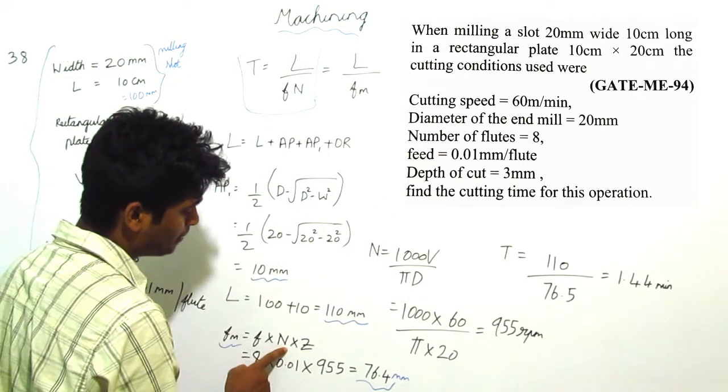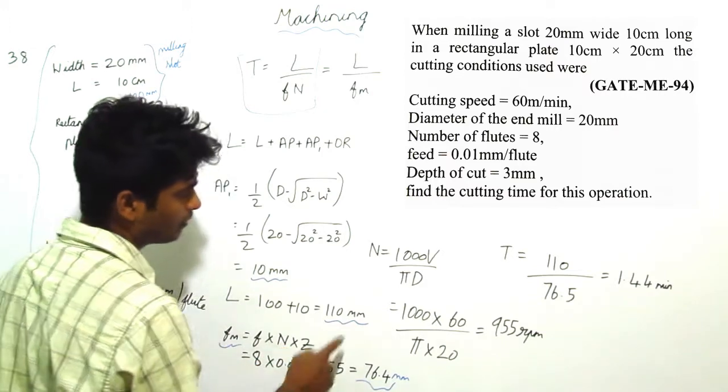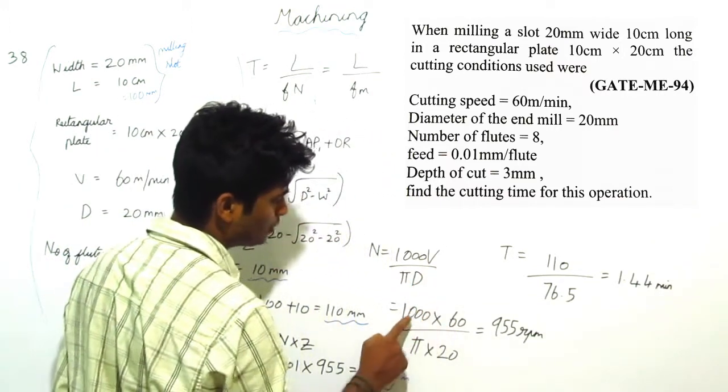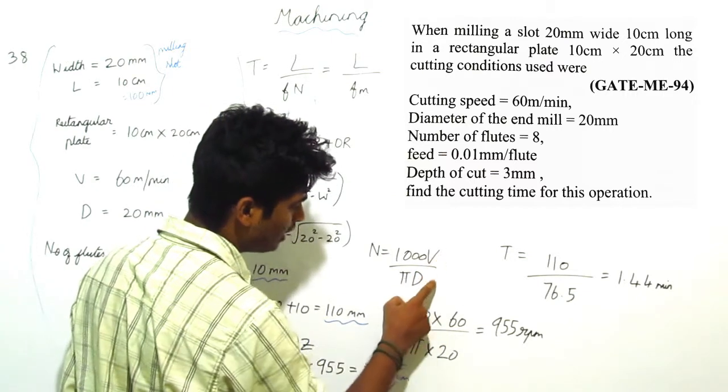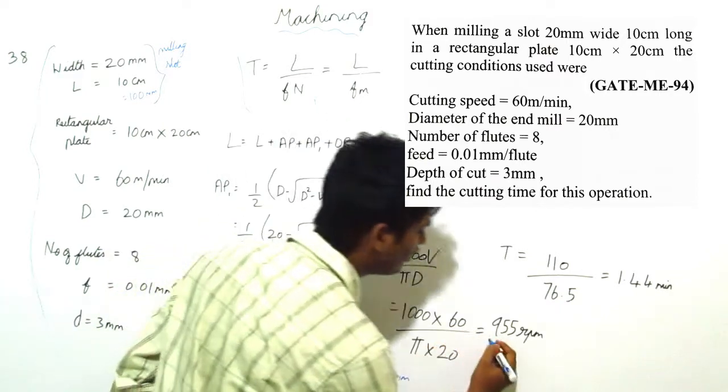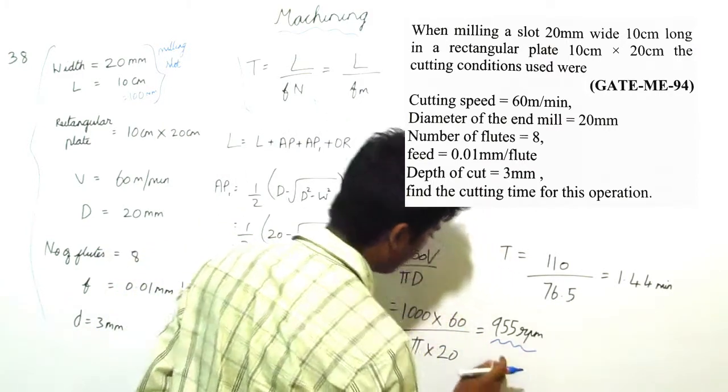We are getting this spindle speed, that is N value. We know that N is equal to 1000 V by pi D. So substituting all those velocity and diameter in this formula we are getting 955 RPM.